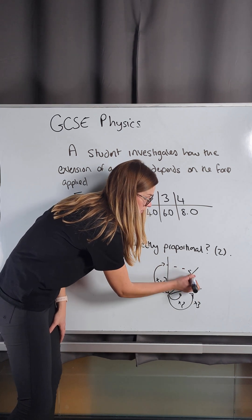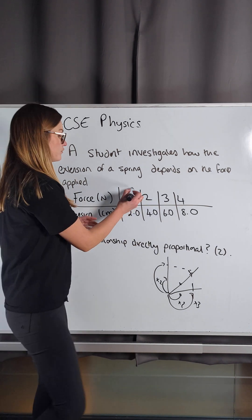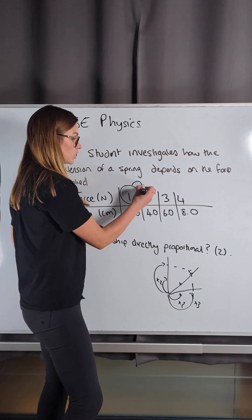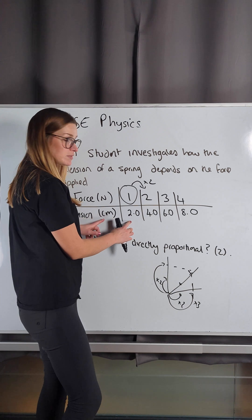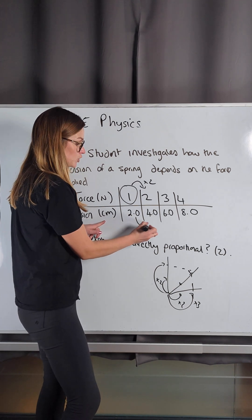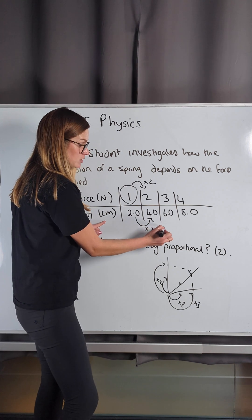So we're trying to see, is that what this data is? If the force gets doubled — so 1 to 2, multiplied by 2 — what happens to the extension? The extension went from 2 to 4, so yes, it also got doubled.